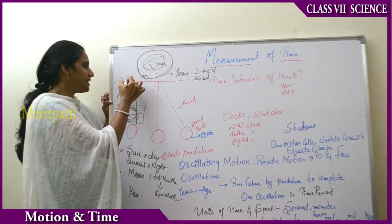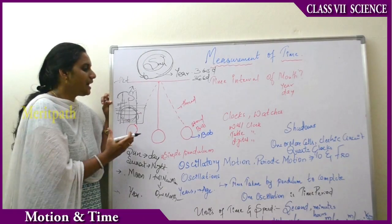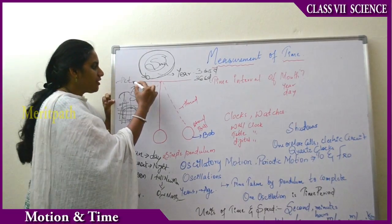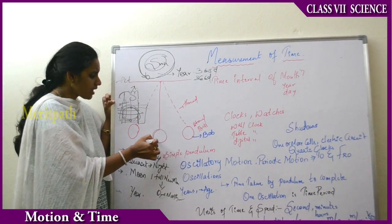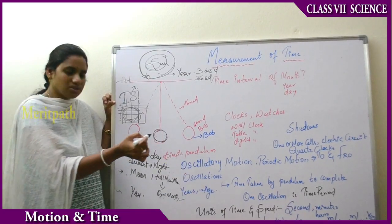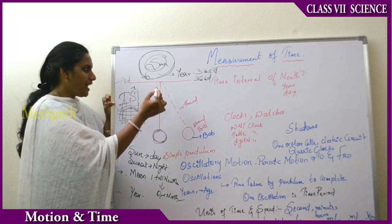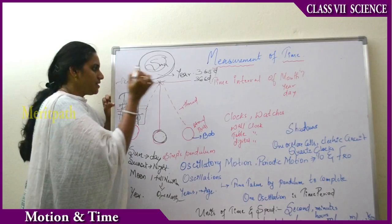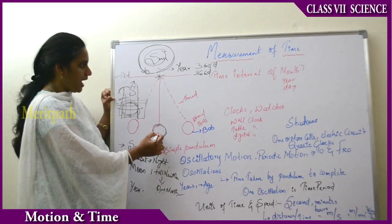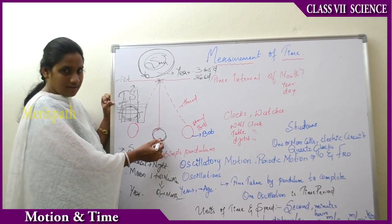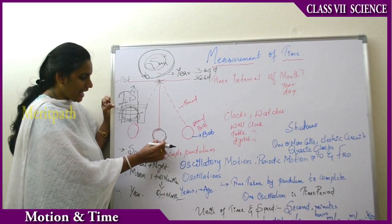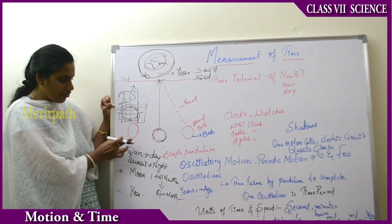I want to do an activity — taking one simple pendulum — to show the time duration of a second. I have taken a simple pendulum as shown in the figure. I have tied a ball, or a stone, which is circular in shape, to a thread, and I have enabled it to stand with the help of a stand. Now I have projected the ball towards the earth.